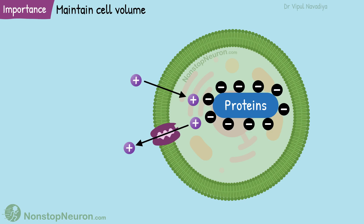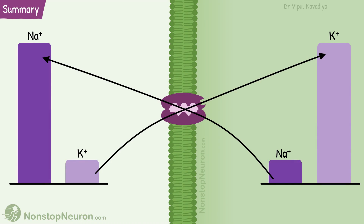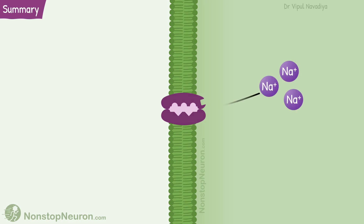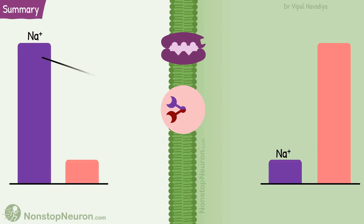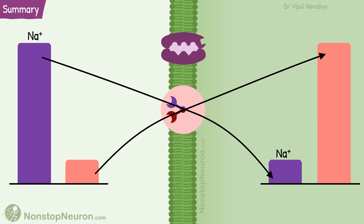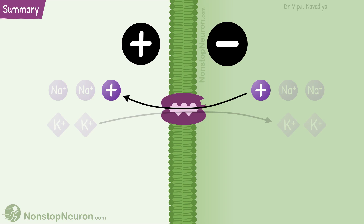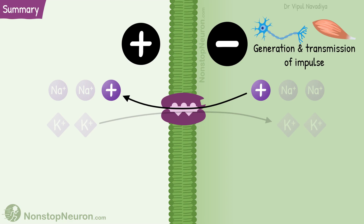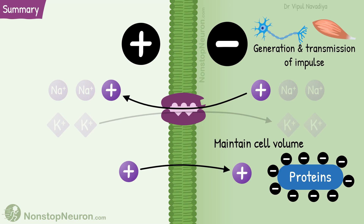This was all about the sodium potassium ATPase pump. Let's have a quick summary. The sodium potassium ATPase pump actively transports sodium out of the cell and potassium into the cell. During each cycle, it moves three sodium out, two potassium in, and uses one ATP. The sodium gradient established by this pump can be secondarily used to transport other substances against their electrochemical gradient. By moving one net positive ion outside, it creates electronegativity inside the cell, which is required for impulse transmission in neurons and muscles. Finally, it balances the ion entry driven by negatively charged proteins inside the cell, which contributes to maintaining cell volume.